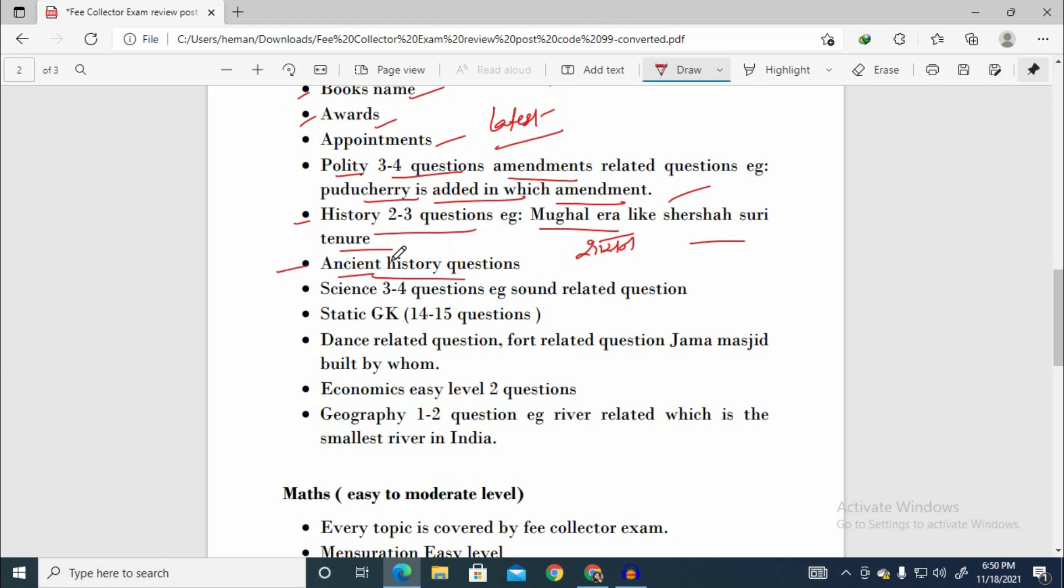From science, 3-4 questions were asked. Static GK - fixed questions about dance, which place, state-wise. 14-15 questions only from static GK. Static GK - I already made a video, you can check and study. There were economics questions, easy level, 2 questions. River related questions like which is India's smallest river. Krishna and Kaveri were given as examples.